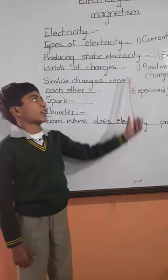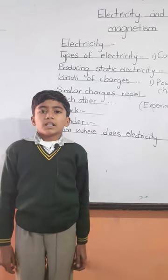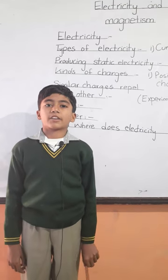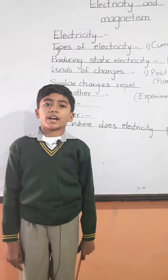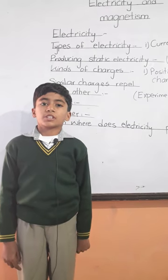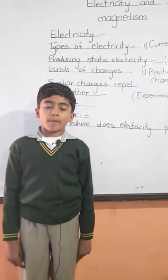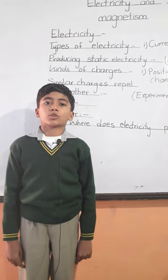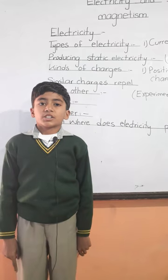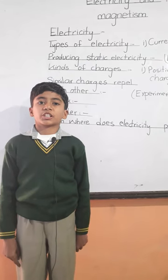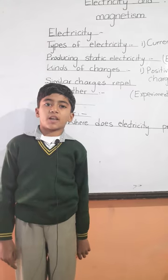Producing static electricity: rub a plastic comb in our hair and bring it near pieces of cotton cloth. We see that the pieces of cotton cloth jump toward the comb and cling to it. It is because static electricity is produced by rubbing, so they attract each other.